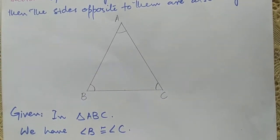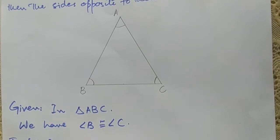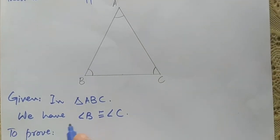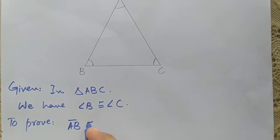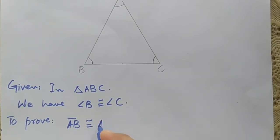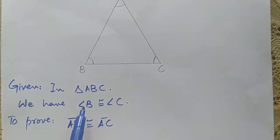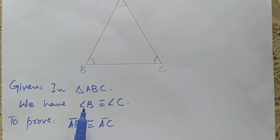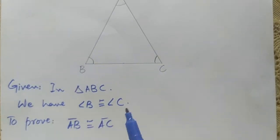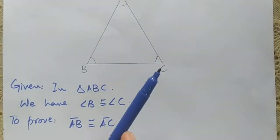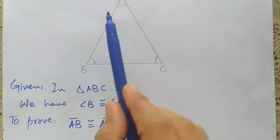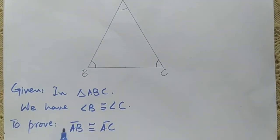What do we have to prove? We have to prove that side AB is congruent to side AC. This is because angle B is congruent to angle C, and the opposite side of angle B is AC, and the opposite side of angle C is AB. So we have to prove these opposite sides are congruent.